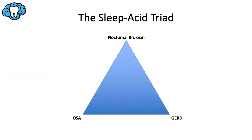Finally, the sleep acid triad: acid reflux, obstructive sleep apnea, and nocturnal bruxism tend to occur together — not always, but there's a strong correlation. Someone with acid reflux is more likely to have OSA and to grind their teeth at night, and so on. GERD is also more common in patients with asthma and is exacerbated by the use of beta agonists, a category of asthma medication.